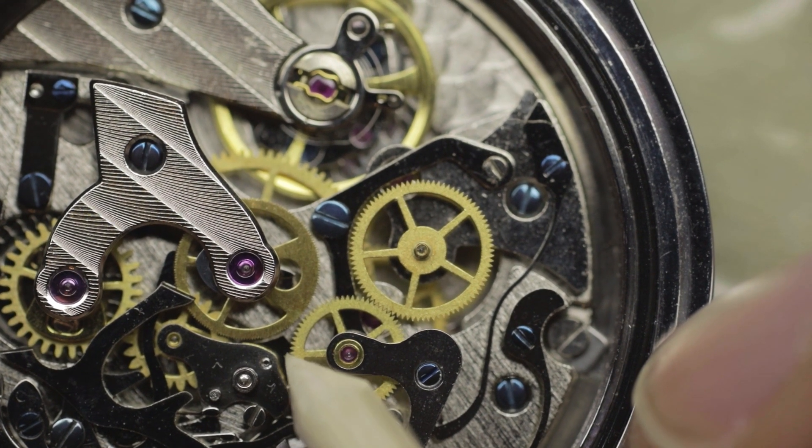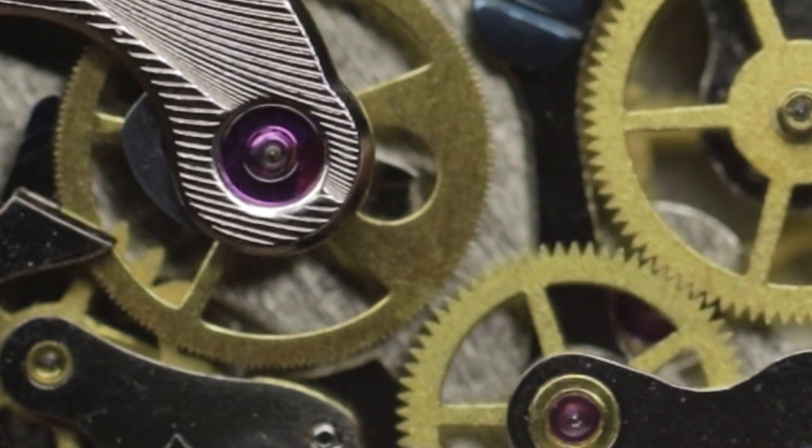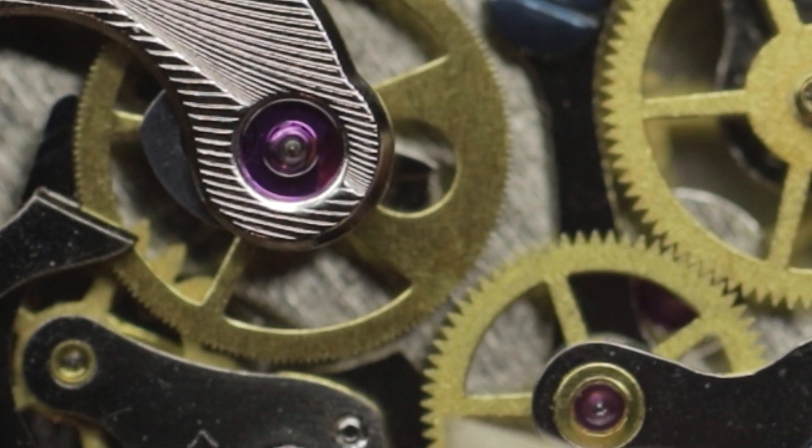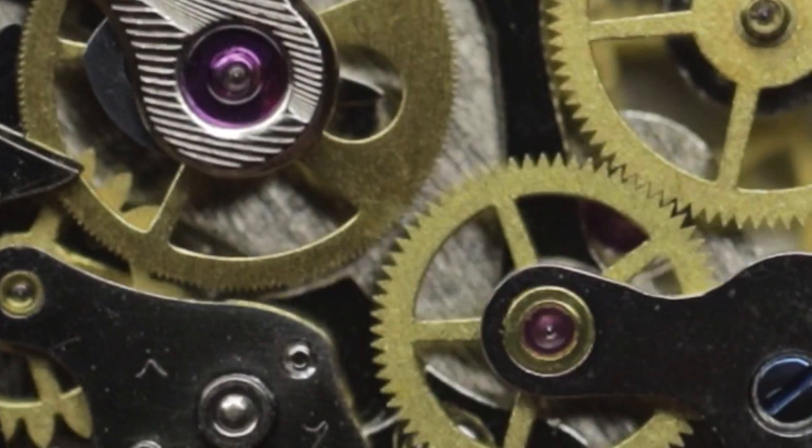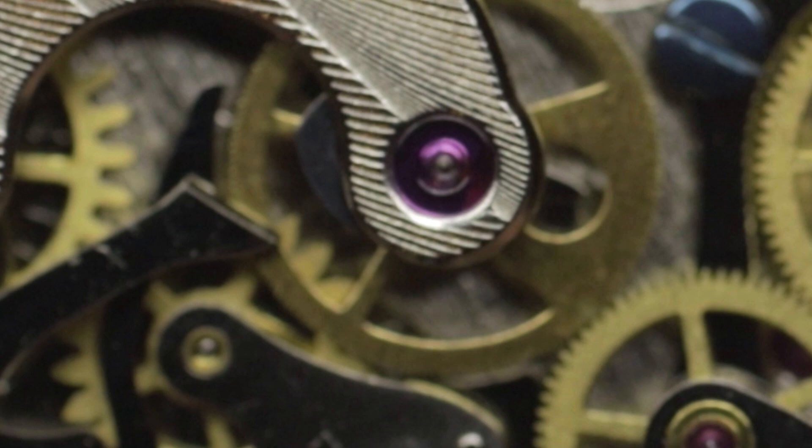Once that one's adjusted you need to move to the meshing of this and the center chronograph runner, and it's exactly the same story with this one, much much harder to see because the teeth on the runner are much finer. But the same story, so you need to put it in the run position.